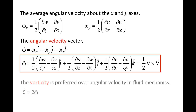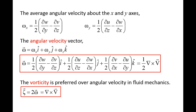In fluid mechanics, it is customary to work with the vorticity instead of the angular velocity. The vorticity is denoted by zeta and is two times the angular velocity vector, or the curl of the velocity field. It should be noted that some fluid mechanics textbooks prefer to use lowercase omega for the vorticity instead of the angular velocity.